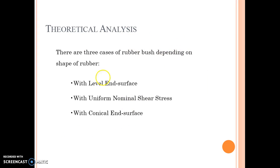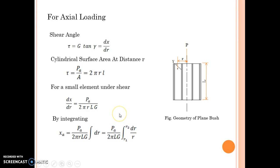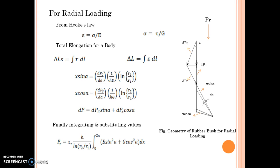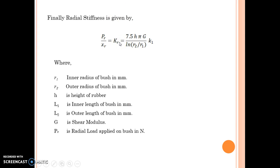For theoretical analysis, basically three different analyses are studied: level length surface, uniform normal shear stress, and conical length surface, depending on the surface of the bush. For axial loading, tau is the shear stress, G is the modulus of rigidity, and gamma is the shear angle. For axial shear stress in conical and hyperbolic shapes, the axial stiffness k is given by 2πG, where l1 and l2 are the lengths of the bush. In case of a cylindrical bush, l1 equals l2. r1 and r2 are the inner and outer radius of the bush, and G is the shear modulus. For radial loading, Kr is the radial stiffness, G is again the shear modulus, and k1 is the factor considered for transverse loading.